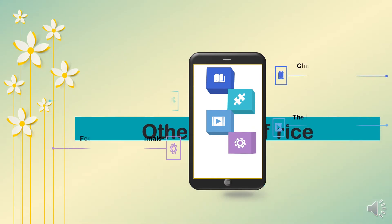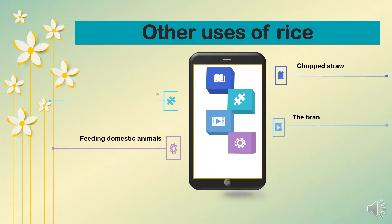Next are the other uses of rice. As we know, rice is a basic food in our daily life. But actually rice can also be used for feeding domestic animals, chopped straw, the bran, and other uses.